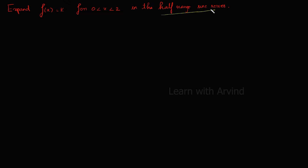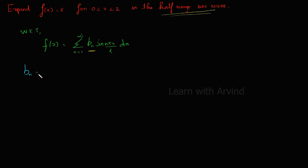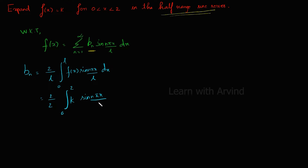This is an example for half range sine series. We are given a function f(x) equal to k in the range 0 to 2. Since we are asked to expand this in half range sine series, we know f(x) equals summation n equals 1 to infinity of bₙ sin(nπx/L). We will find the constant bₙ. bₙ equals 2 by L times the integral from 0 to L of f(x) sin(nπx/L) dx. Substituting L equals 2: it becomes 2 by 2 times the integral from 0 to 2 of k sin(nπx/2) dx. Since 2 and 2 cancel and k is a constant, we take it out: k times the integral from 0 to 2 of sin(nπx/2) dx.